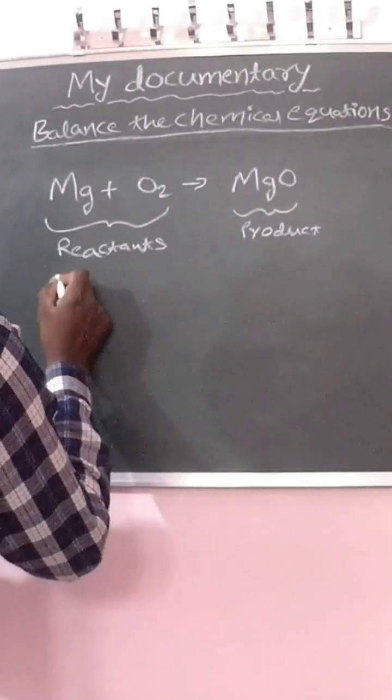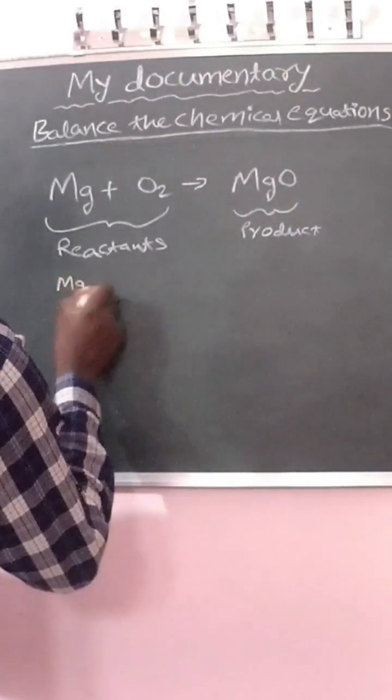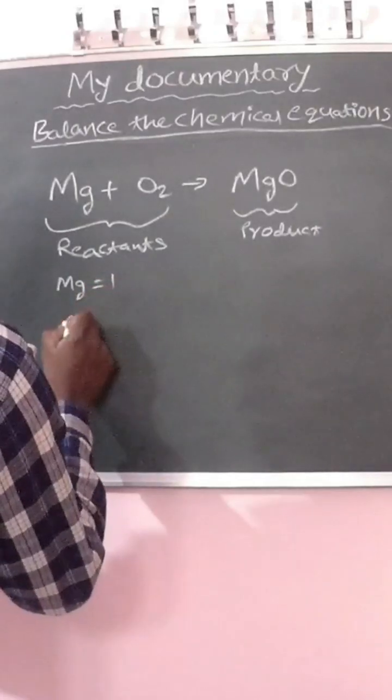in the reactants side, the number of magnesium atoms is 1, the number of oxygen atoms is 2.